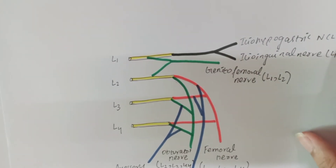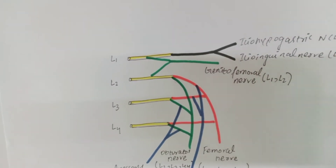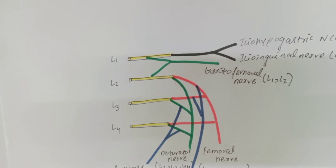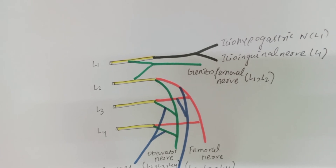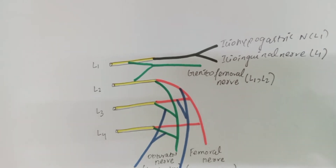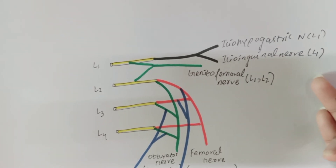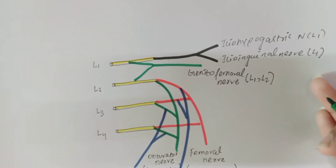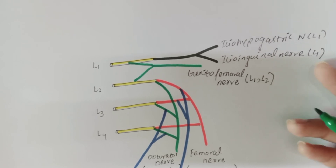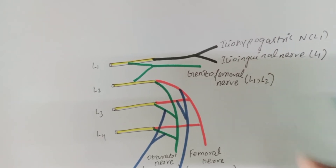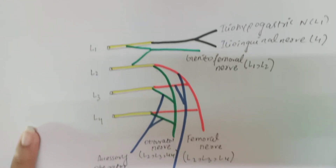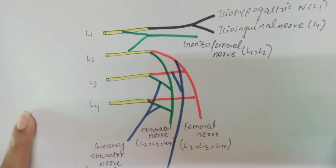The ilio-hypogastric nerve supplies the skin of the gluteal region and the anterolateral muscles of the abdomen. The ilio-inguinal nerve supplies the contents of the inguinal canal. The genitofemoral nerve gives off two branches: the genital branch and the femoral branch.